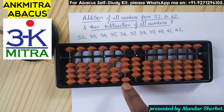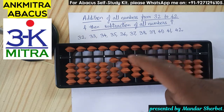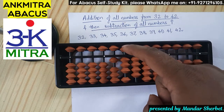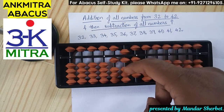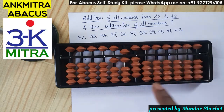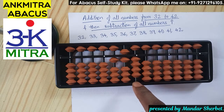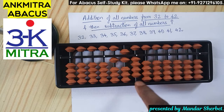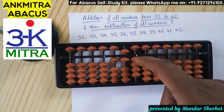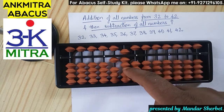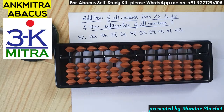Next number is 36. To add 3 on the tens place I can use the small friend formula, which is plus 5 minus 2. To add 6 on the units place, I don't have 6 available so I'll use the big friend formula of 6, which is minus 4 plus 10. 36 is done.